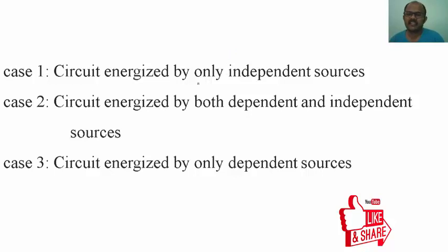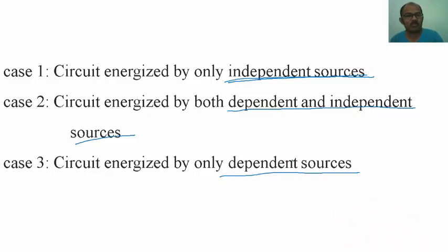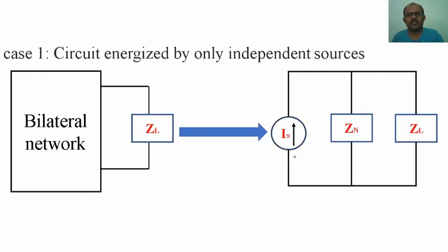Let us discuss the three cases. Case 1: the circuit is energized by only independent sources — voltage sources or current sources, with no dependent elements. Case 2: both dependent and independent sources are present. Case 3: only dependent sources are present, with no independent sources. These three cases apply to both Thevenin's and Norton's theorem, and both methods give the same answer.